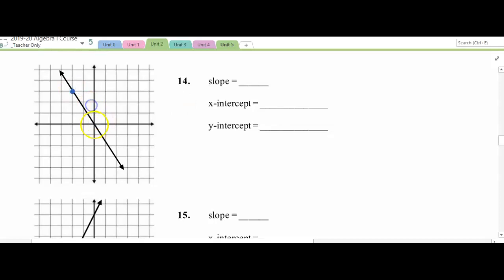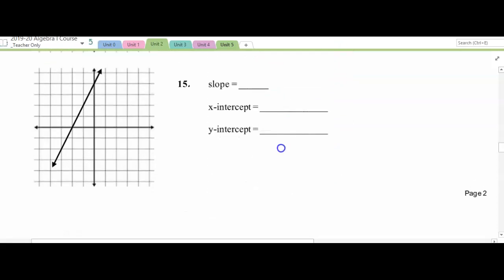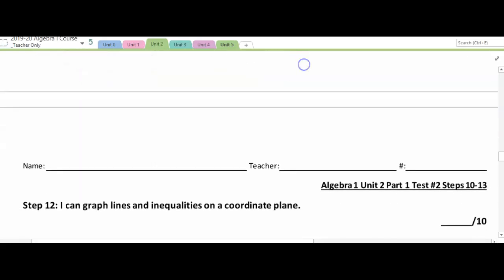This looks like a nice point. This is a nice point. I'm going down 3, right 2. So that's my slope. My x intercept is right there at the origin, 0, 0. And same with my y intercept. My slope, I'm going to rise 2, run 1. So 2 over 1 is just 2. My x intercept is at negative 2, 0. My y intercept is 0, 4, right up here.